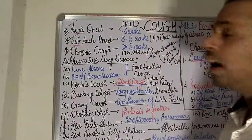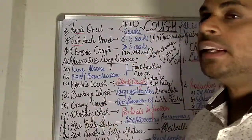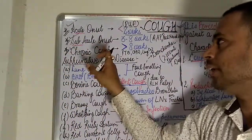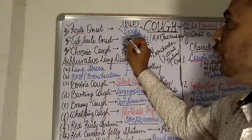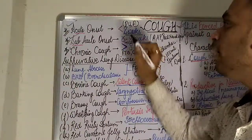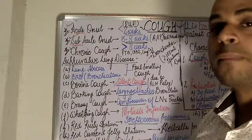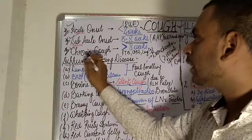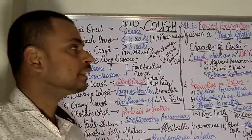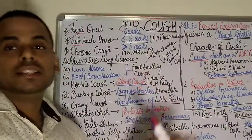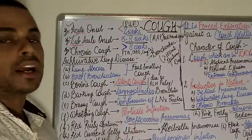If the duration of the cough is less than two weeks, it is said to be of an acute onset. If the duration is between three to eight weeks, it is categorized as subacute cough. If the cough persists for greater than eight weeks, it falls under the category of chronic cough.